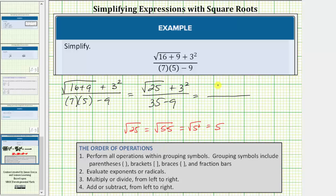So in the numerator we have five plus three squared is equal to three times three, which equals nine. Going back down to the denominator, thirty-five minus nine is equal to twenty-six.